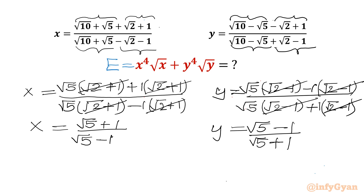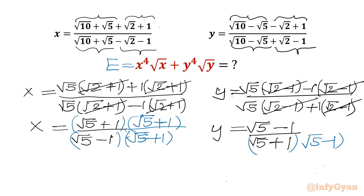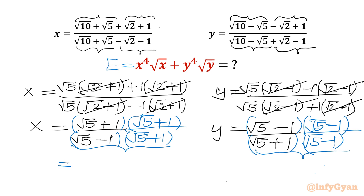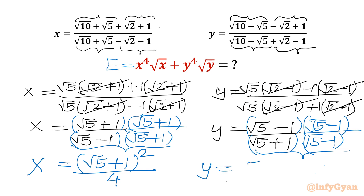Now I will rationalize the denominators. For x, multiplying numerator and denominator by (√5 + 1): the numerator becomes (√5 + 1)² and the denominator is (√5)² - 1² = 4. So x = (√5 + 1)² / 4. Similarly, y = (√5 - 1)² / 4, since the denominator is again 5 - 1 = 4.